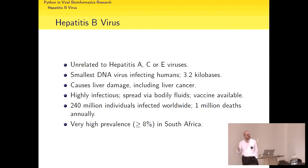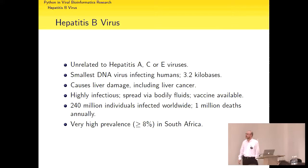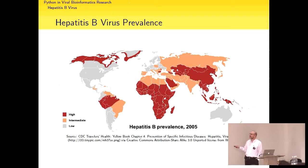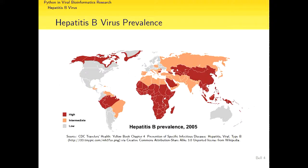HIV is about 10 kilobases. It's a very compact genome. HBV causes liver damage and liver cancer, is highly infectious, spread via similar routes to HIV through bodily fluids. A vaccine is available, but currently 240 million people are infected worldwide, with about a million deaths annually from HBV-related illness. In this country, greater than 8% prevalence — most of Africa is high prevalence — and co-infection with HIV is a growing public health concern.